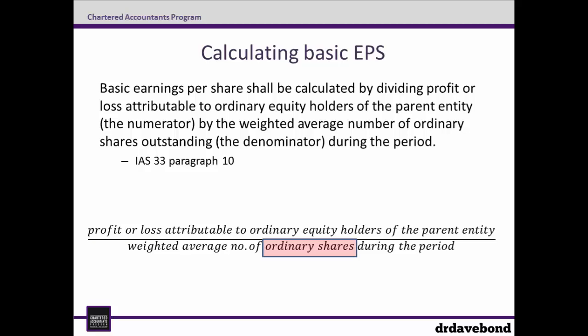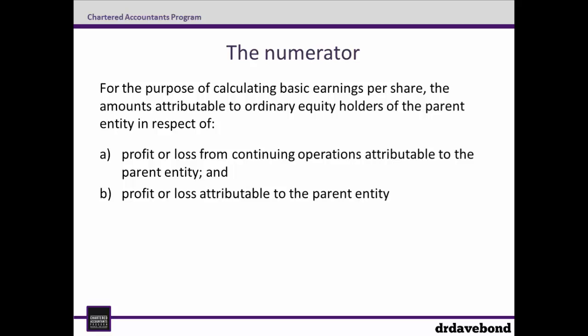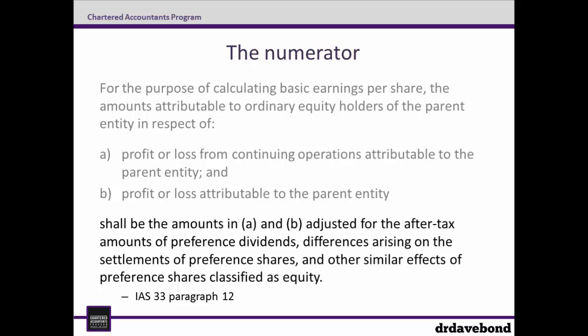We're going to look at each in turn, starting with the numerator. According to paragraph 12, for the purpose of calculating basic earnings per share, the amounts attributable to ordinary equity holders of the parent entity in respect of (a) profit or loss from continuing operations and (b) profit or loss attributable to the parent entity shall be adjusted for the after-tax amounts of preference dividends, differences arising on settlements of preference shares, and other similar effects of preference shares classified as equity.